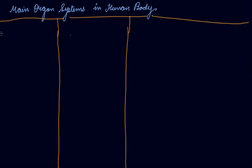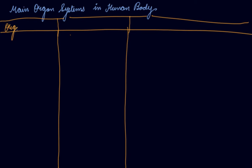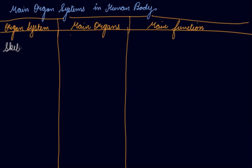So first, we will write the organ system, then the main organs used in that system, and their main function. The first organ system is the skeletal system. Your skeleton is made up of bones, so the main organ is bones.